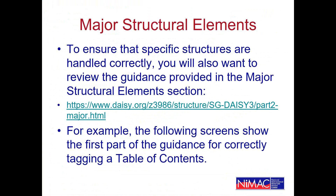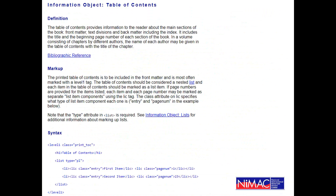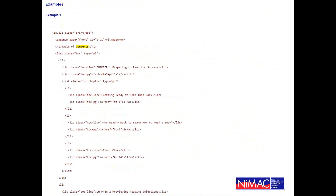Another section worth pointing out specifically is 'Major Structural Elements,' which is very helpful for reviewing the overall structure of the XML file for your book. As an example, it includes the first part of guidance for coding a table of contents, which in K-12 textbooks is almost always present. That entry is followed by several examples, helping ensure you correctly handle that structure.